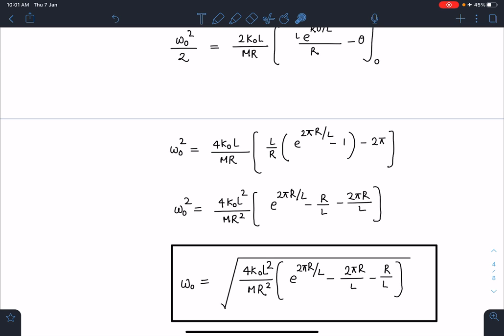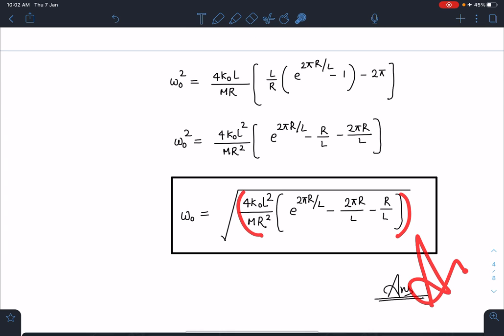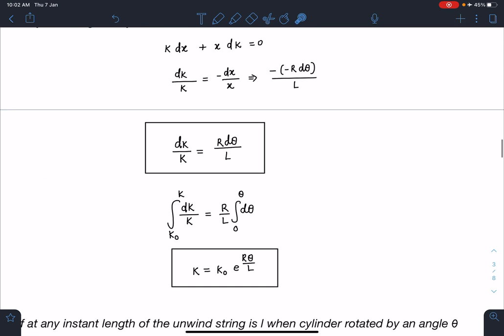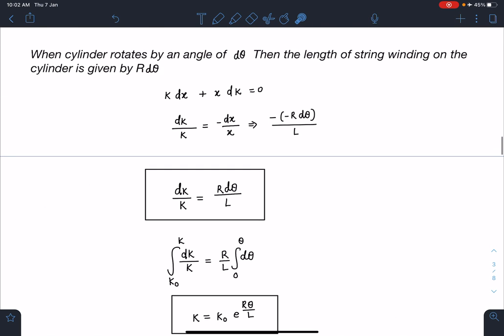We are going to get this: ω₀² = (4k₀L²/MR²)(e^(2πR/L) - R/L - 2πR/L). Or I can say ω is the root of this big quantity inside. This is going to be the final answer for this problem. It's very, very difficult. If you face such type of problem in the exam hall, cracking that I feel is going to be very tough.